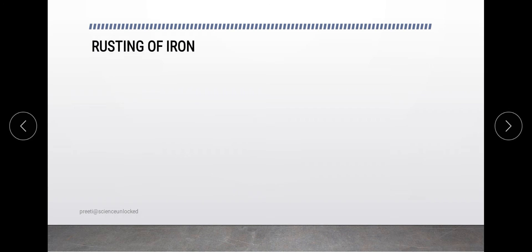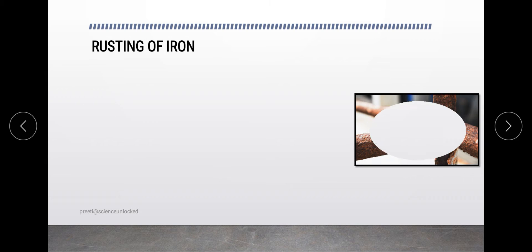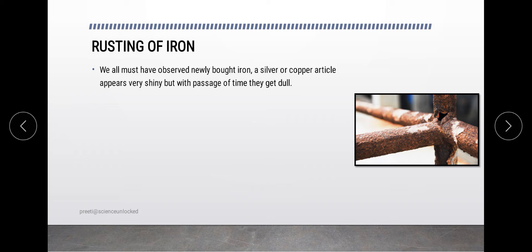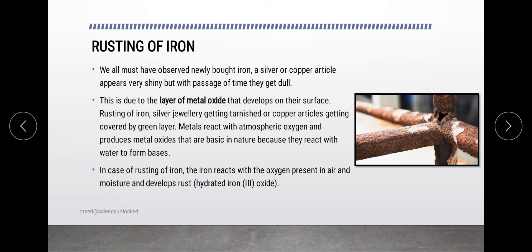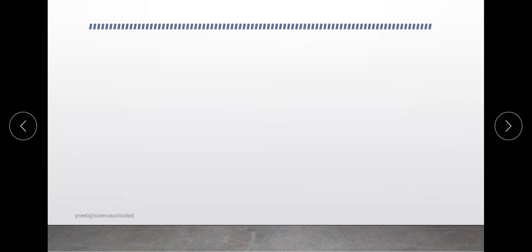The first thing we are looking into is the rusting process — rusting of iron — where the metal iron gets rusted and oxidized, loses its shine, and becomes dull as time passes. Because of oxidation, a layer of rust is generated onto the metal, which ultimately makes it deteriorated and useless, so we need to replace the material or the iron in whatever we are using.